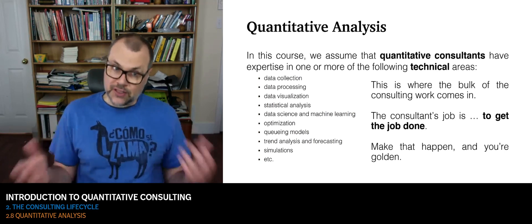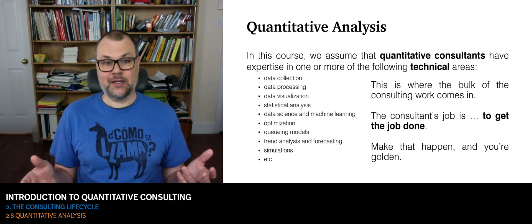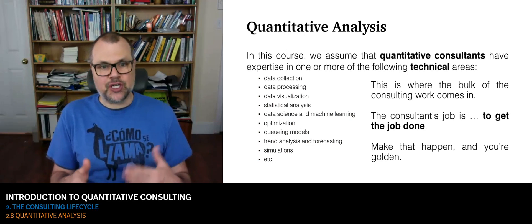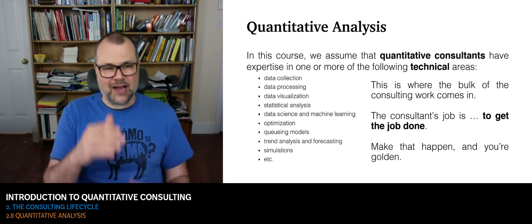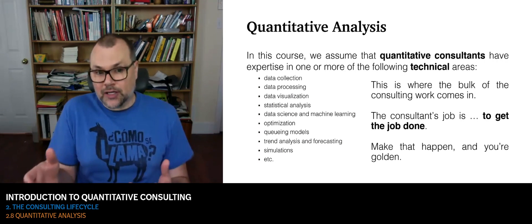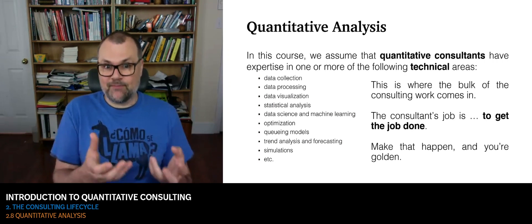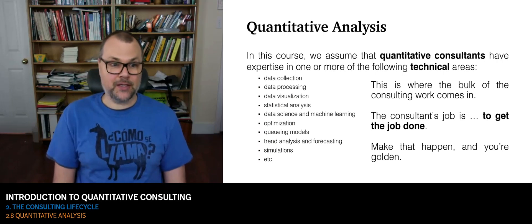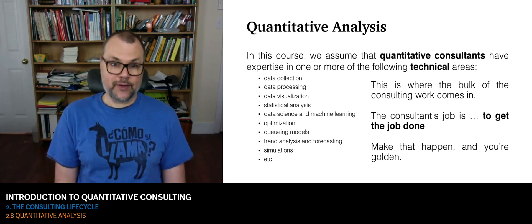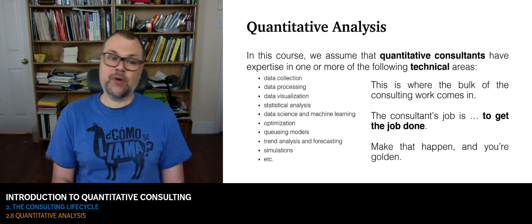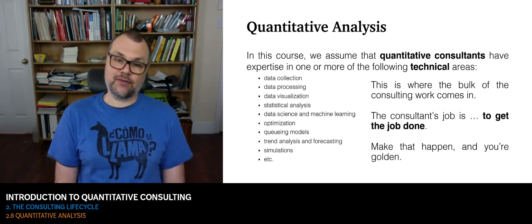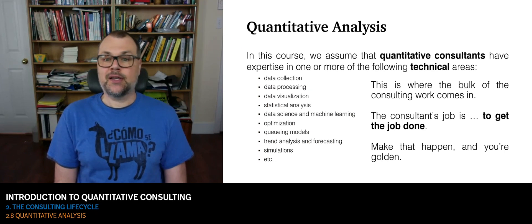You can do statistical analysis on the data. You might be able to solve the problem through data science means and machine learning means. Machine learning is just another way in which we can get insights from data. Perhaps you're going to be working with an optimization problem — it could be a queuing system problem. You might have to do trend analysis and forecasting through various time series, or run simulations and so forth.